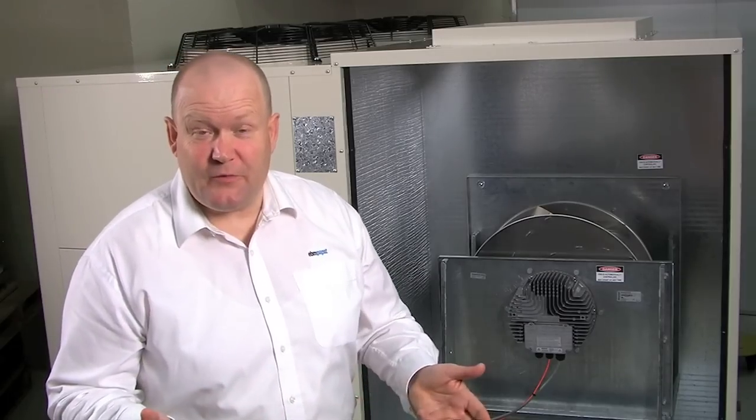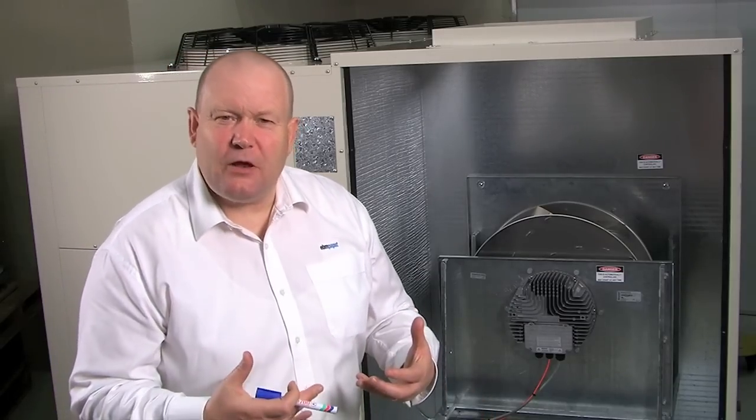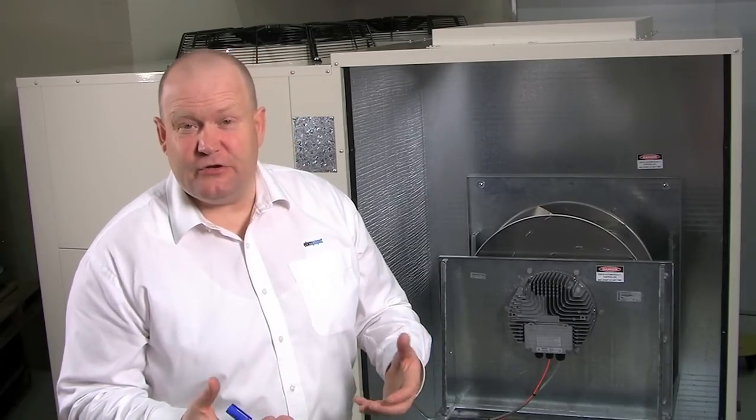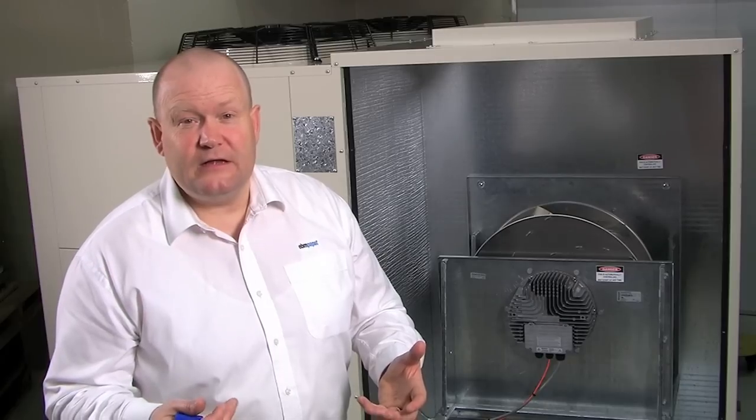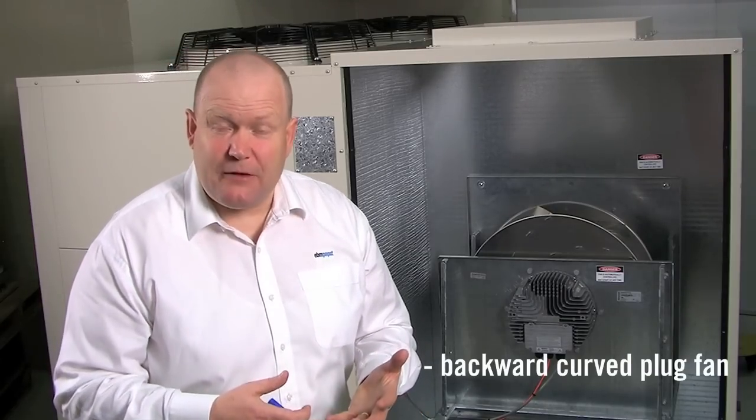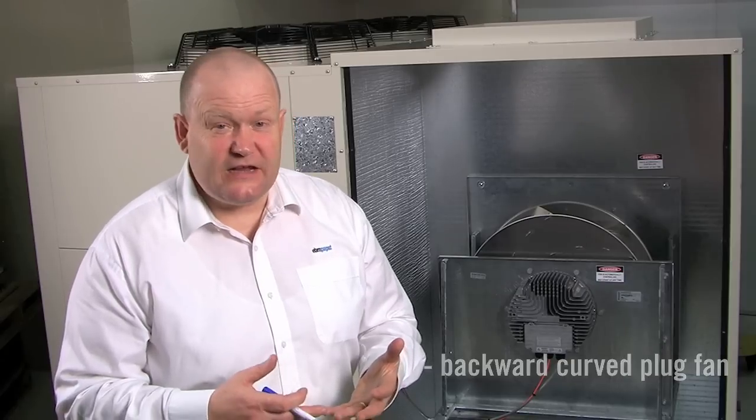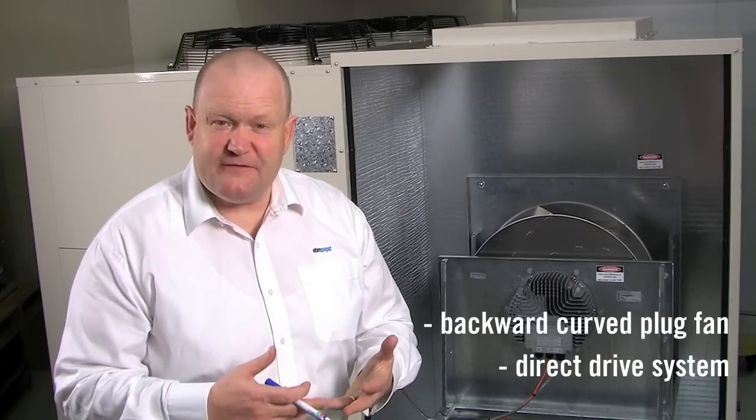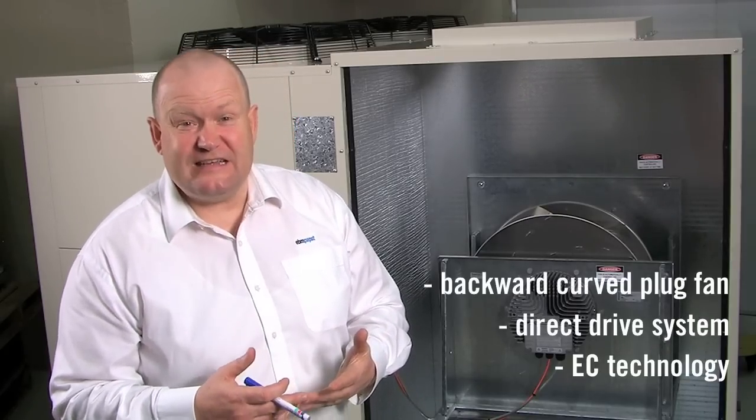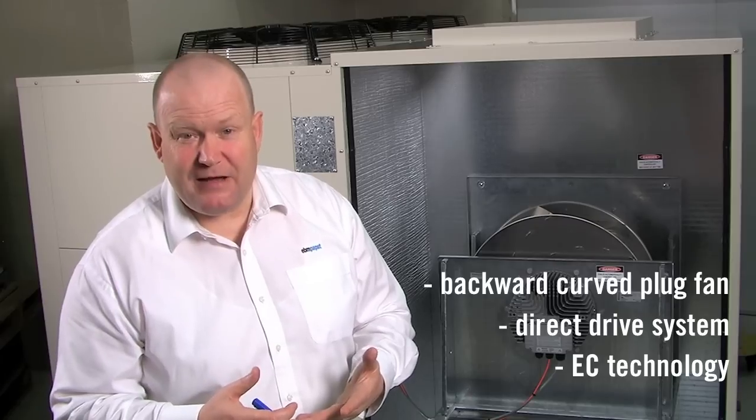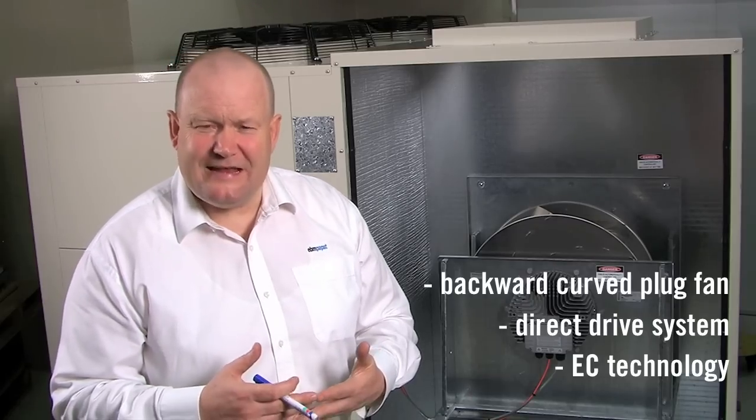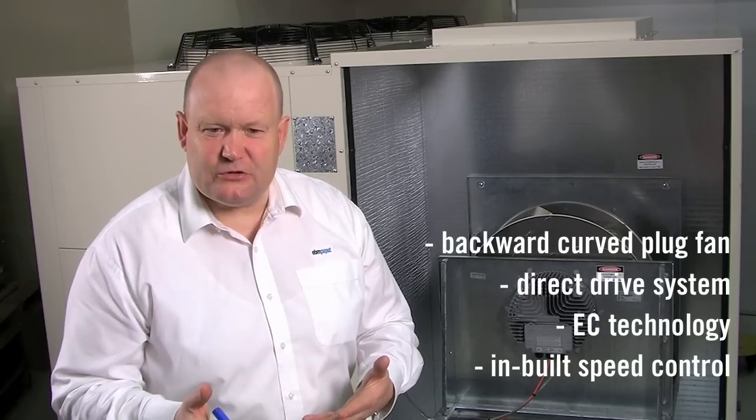So in summary, here we have an EC plug fan inside an air conditioning unit or air handling unit. It's a much more efficient unit because it uses backward curve fan technology. Secondly it's a direct drive system. Thirdly it has EC high efficiency permanent magnet motor technology which has inbuilt high efficiency speed control.